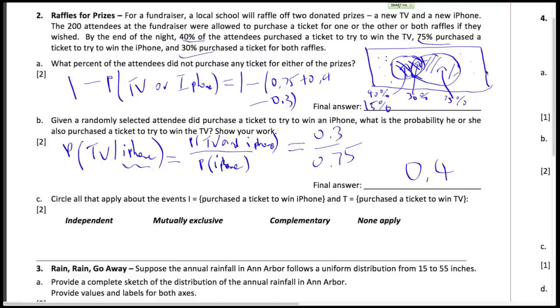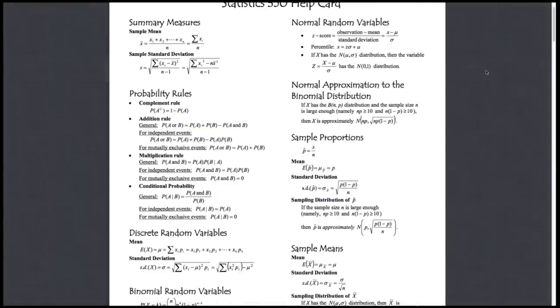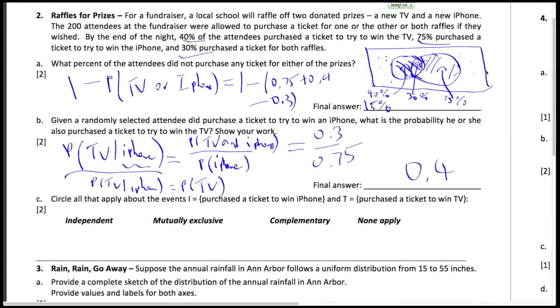Now here's the fun part: because the probability of TV given an iPhone is the same as the probability of a TV, we can apply this conditional probability rule for independent events. So if they're equal, and they're both equal to 40%, then the two are independent.